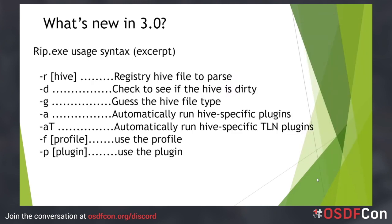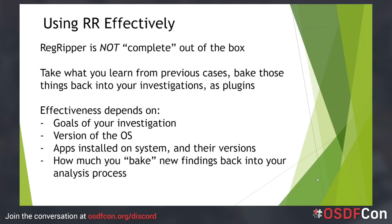The command line tool, rip.exe, also has a couple of updates, shown directly from its usage syntax. You can still run rip.exe using individual plugins or profiles. You can also check whether a hive is dirty or check the hive type. You can run all applicable plugins with report output — the same functionality as the GUI — or choose to run only those plugins with five-field timeline output, which is useful for creating timelines from a user's profile. Analysts still have the capability to create and run their own profiles based on their processes and playbooks.